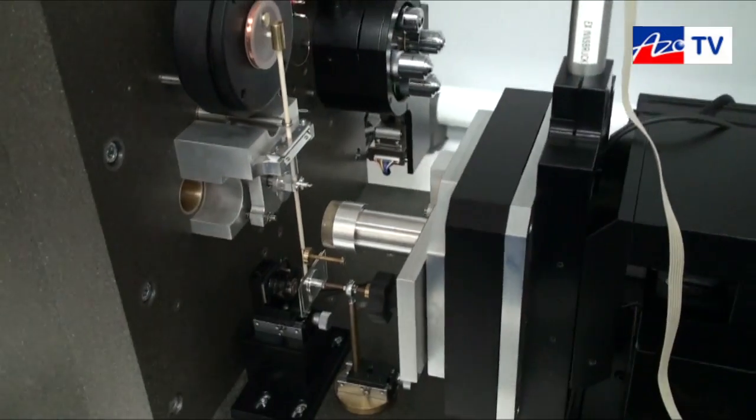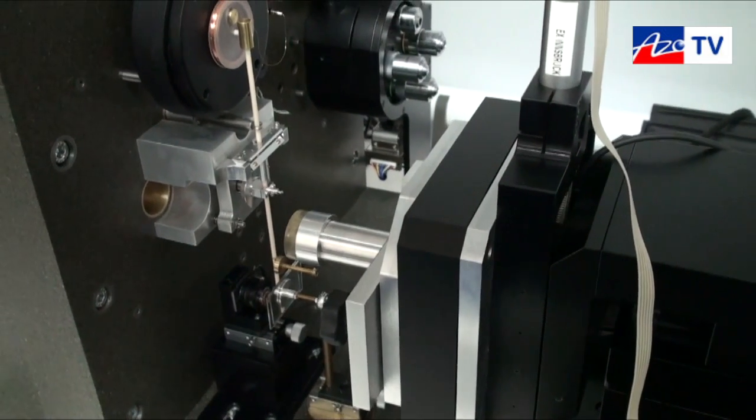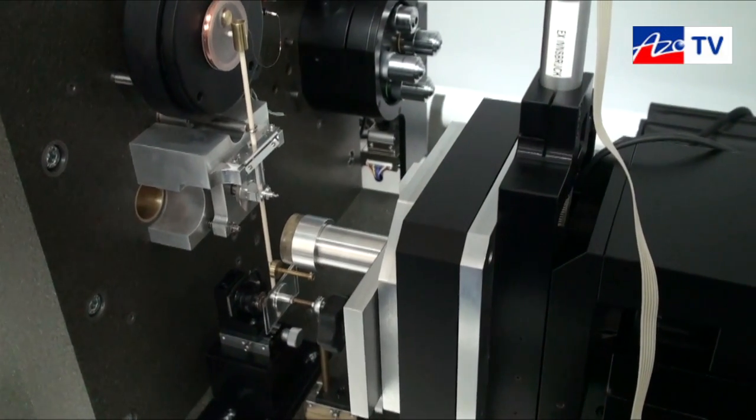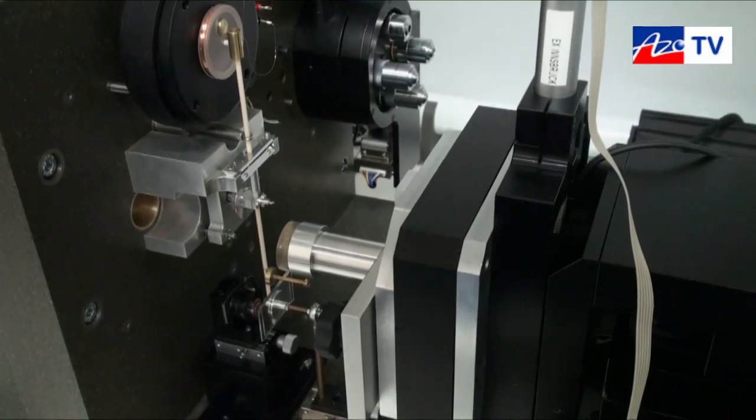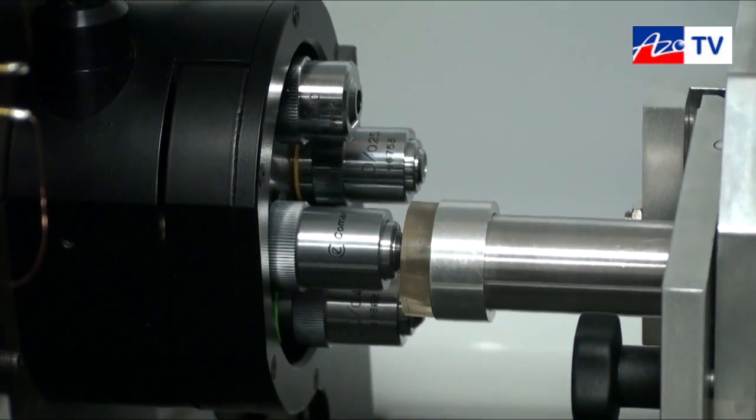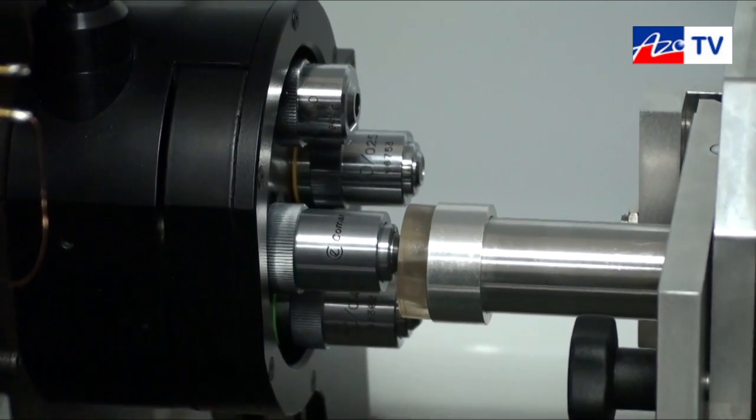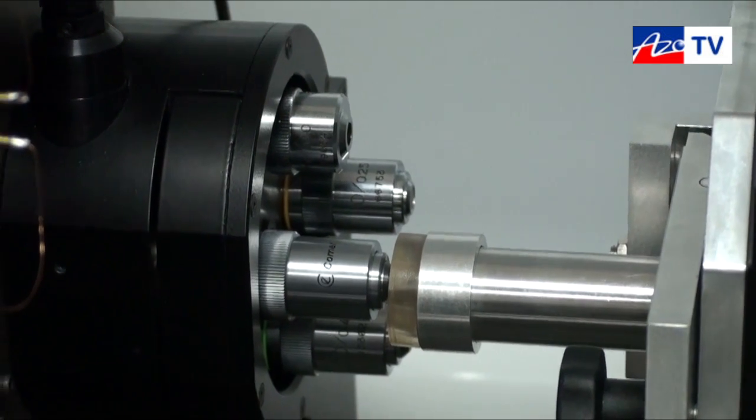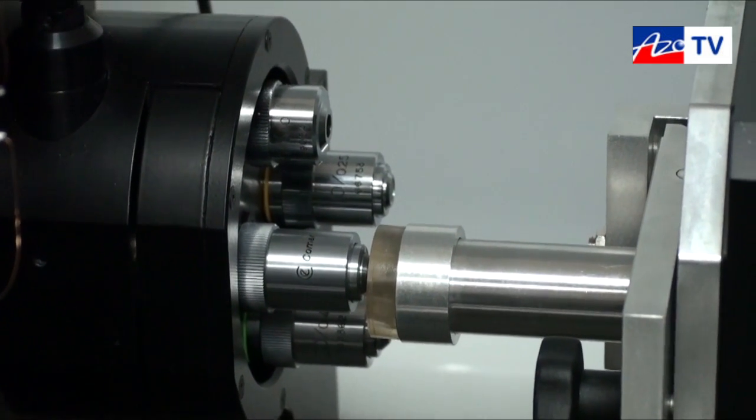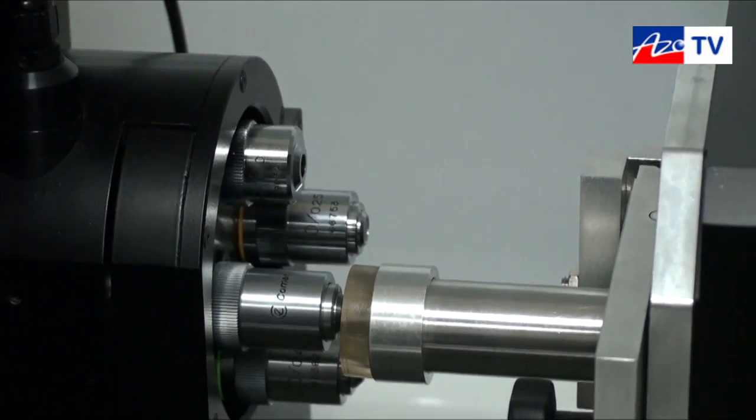The way that we run experiments on the Vantage is we start by lining them up under the microscope. I'm just going to move from the indentation position over to the microscope position. This means we can identify areas on the surface where we want to make our indentations. We can either set up single indentations at individual points of interest or we can set up grids to look at areas of the sample which are of interest.